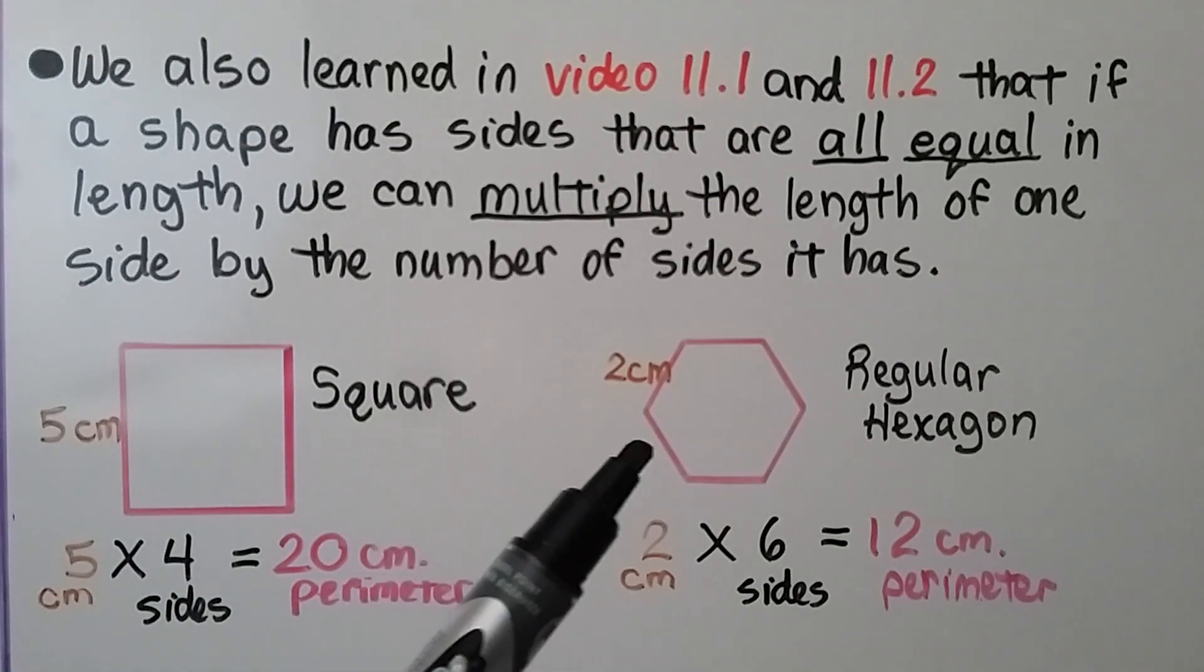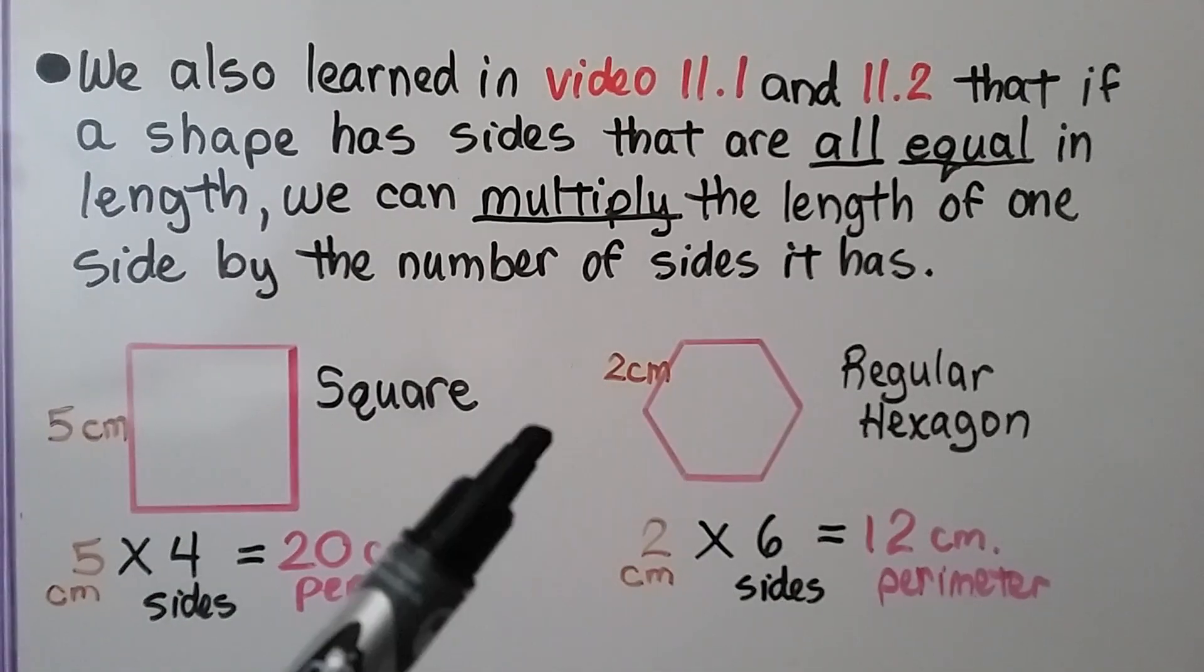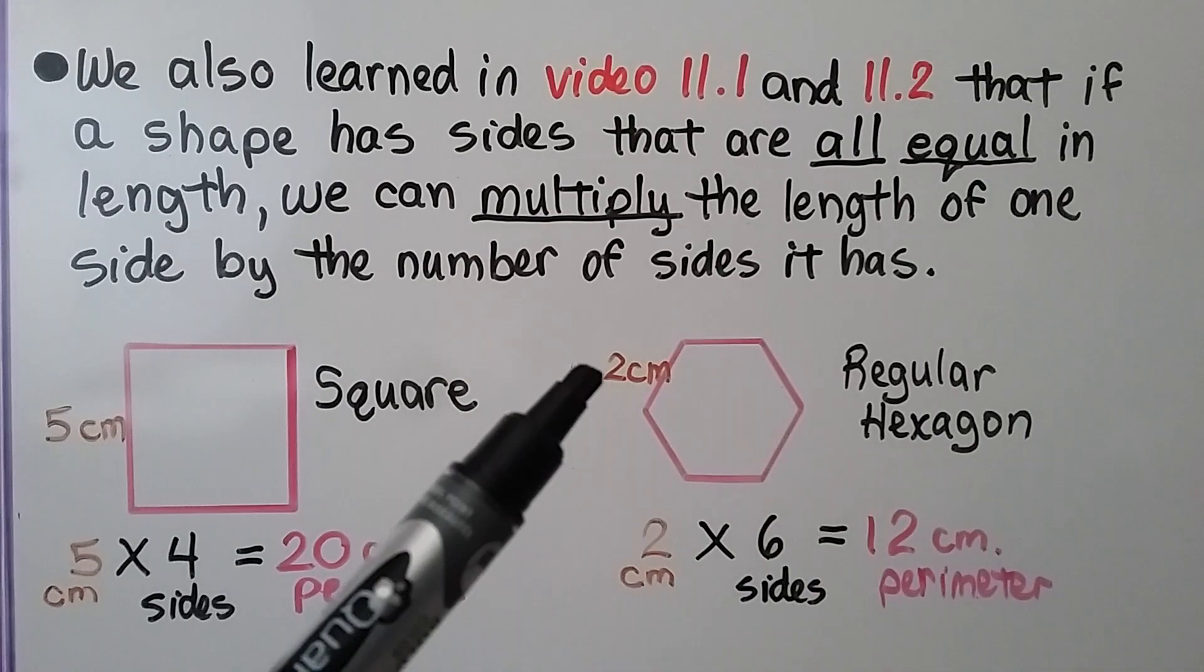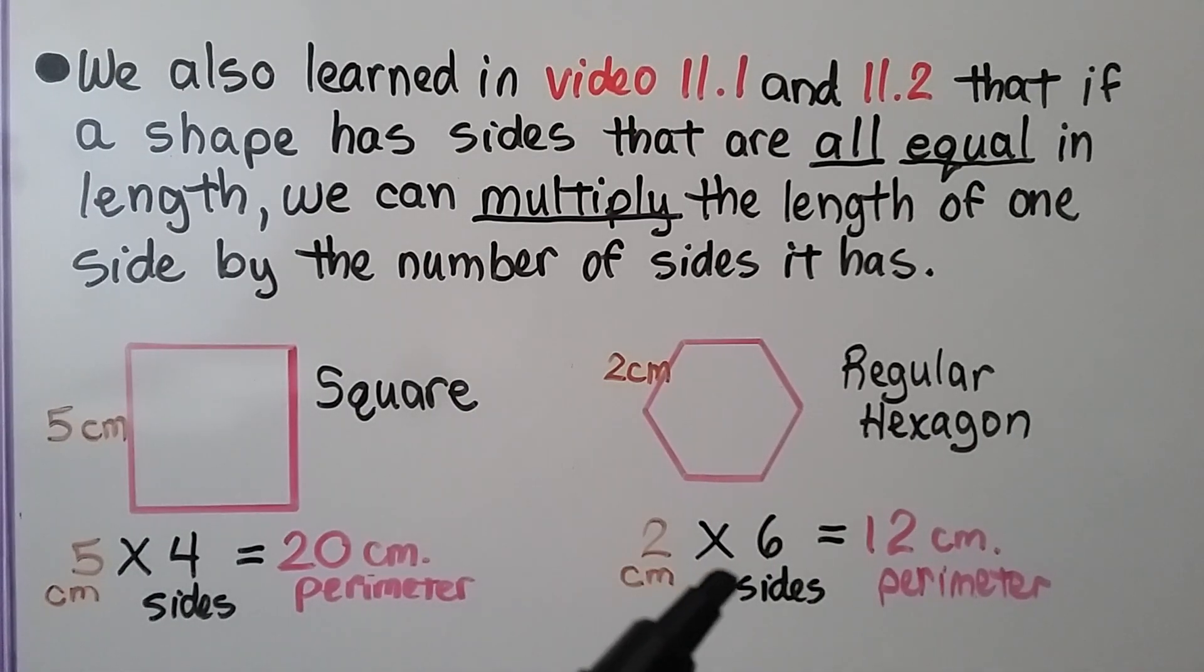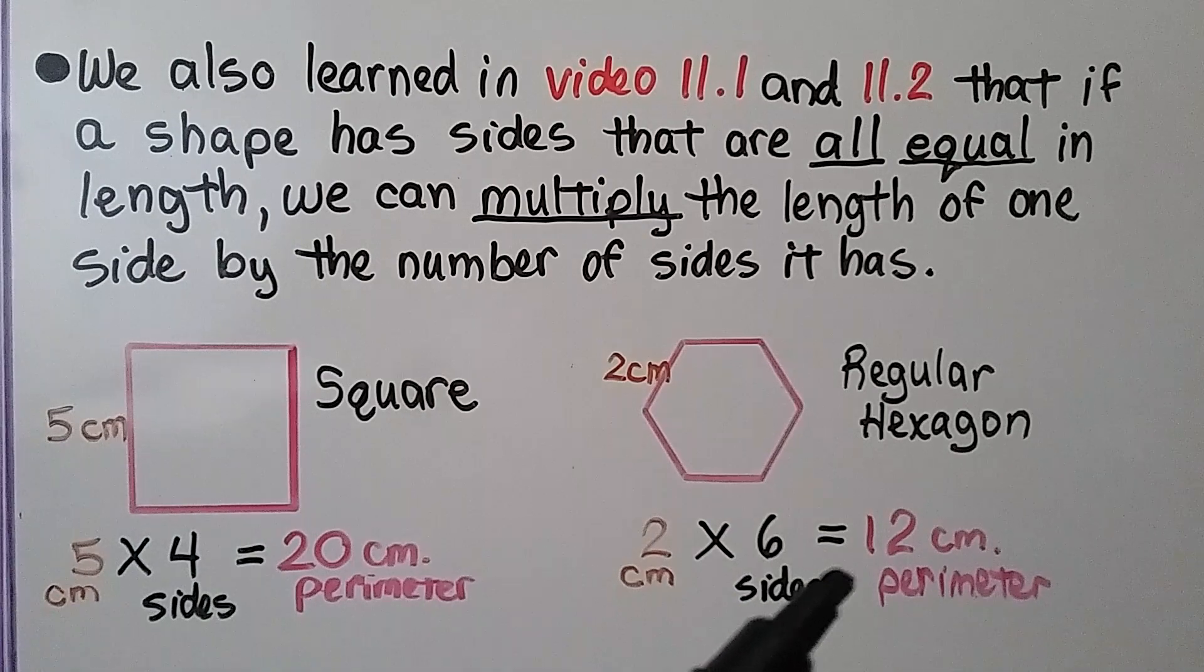Here we have a regular hexagon. It has six sides. It gave us that this side is 2 centimeters. We can do 2 centimeters times the six sides, and we'll know that it is equal to 12 centimeters for the perimeter.